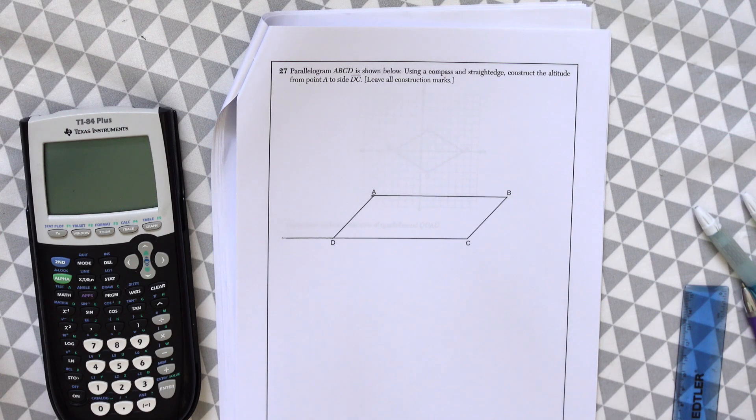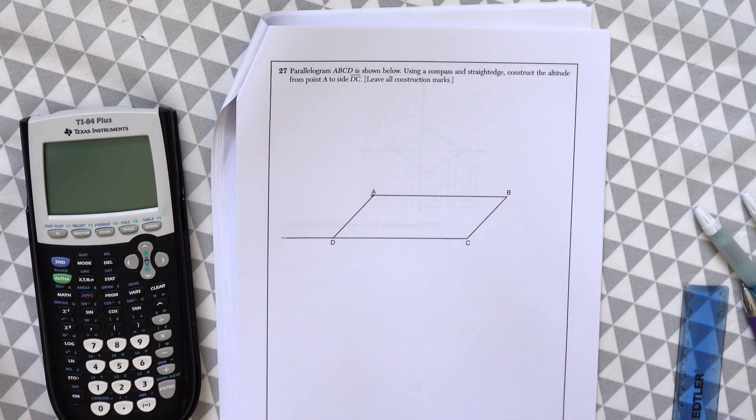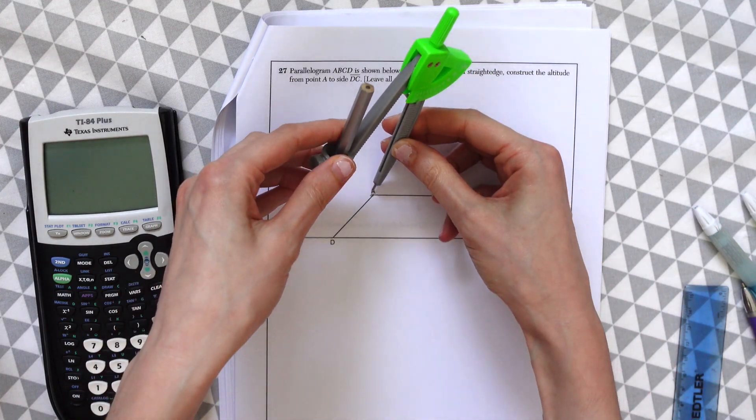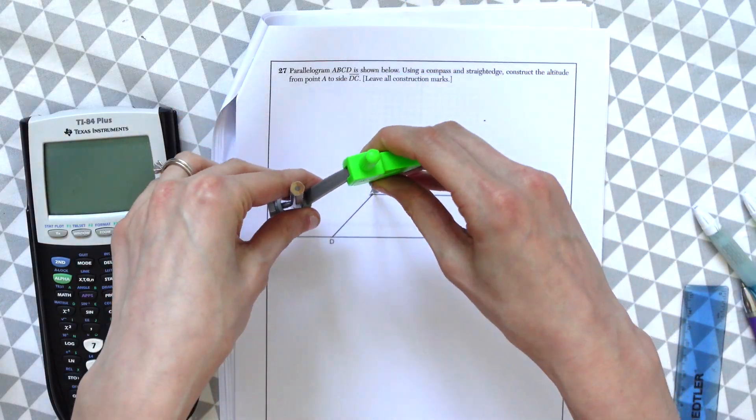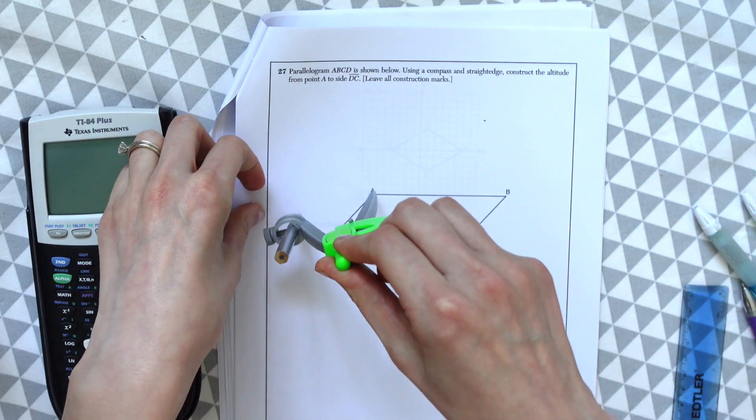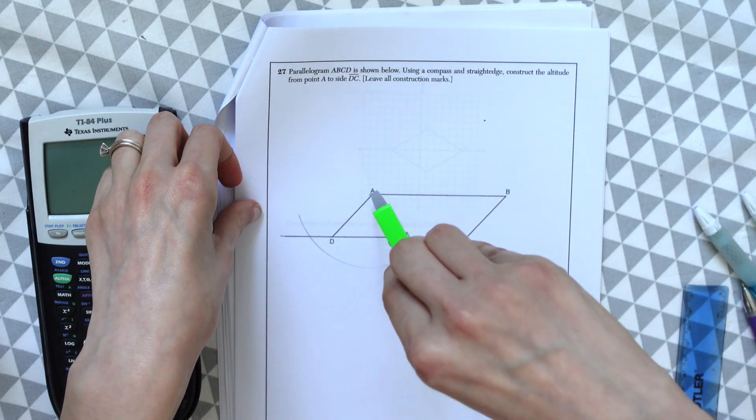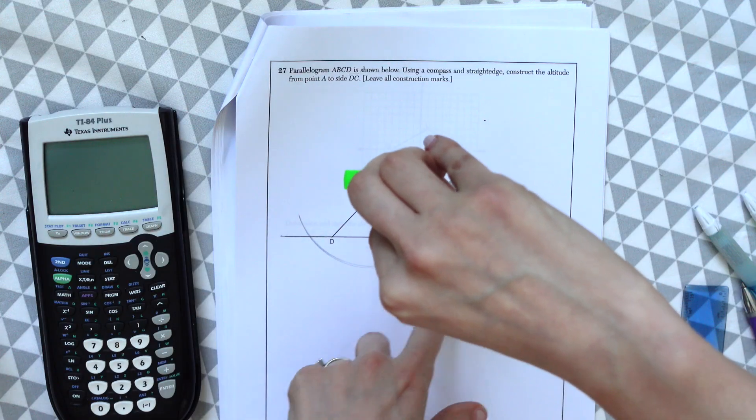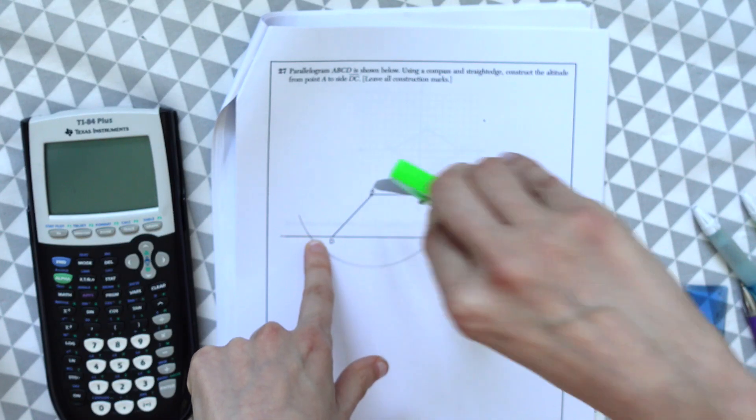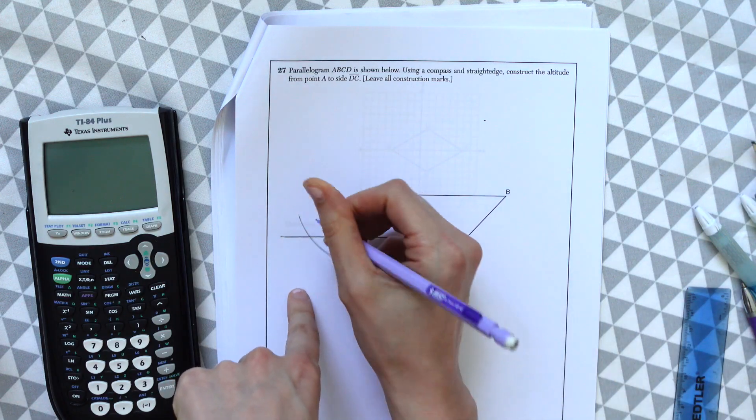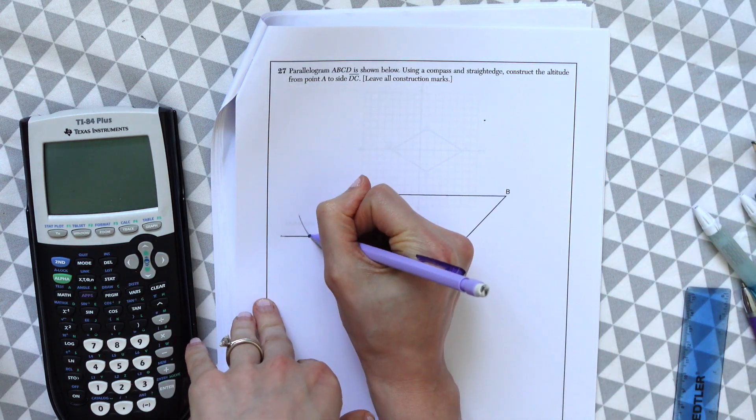Next, we're going to draw an arc from point A that intersects DC at two points, and then mark both points. So we're going to take our compass, bring the point to point A, and then we're going to just take an arc that intersects the line we just made along DC. And then you could see why we extended that line. And then we're just going to mark off our points here.